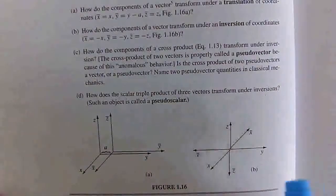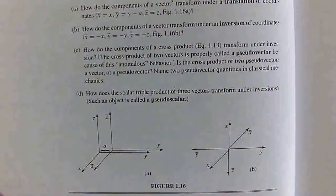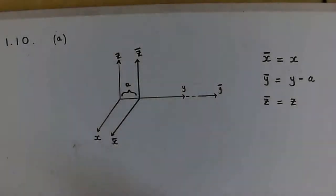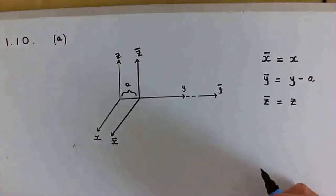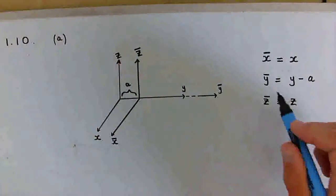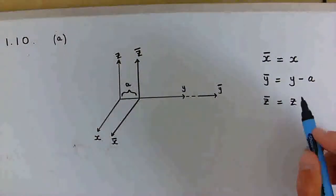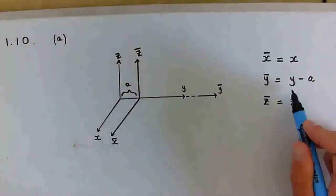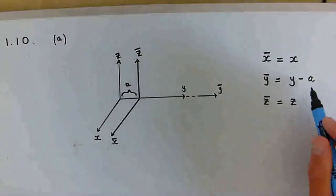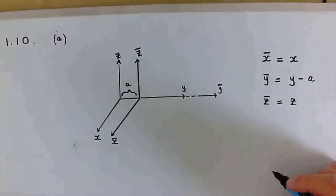A translation is shown here and an inversion is shown here. Part A wants us to determine how the components of a vector transform under the translation of the coordinate system. This is the translation where the x-coordinate stays the same, the y-coordinate becomes modified slightly by subtracting a constant A, and the z-coordinate also stays the same.